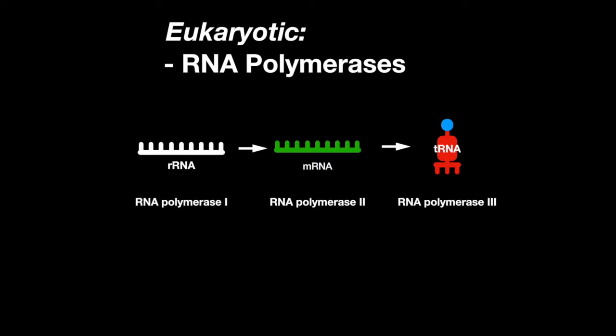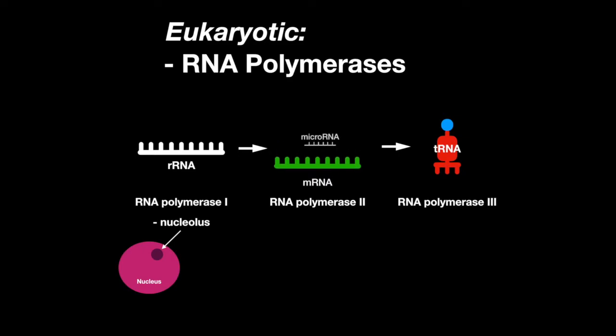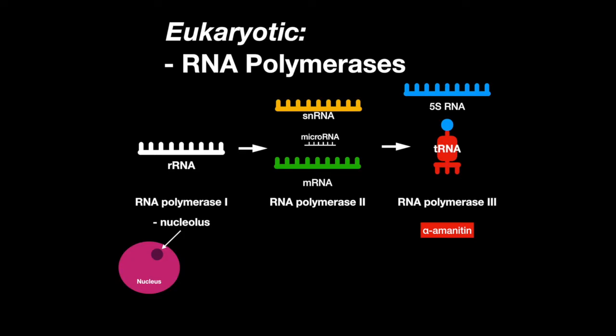RNA polymerase 1 is only present in the nucleolus and makes rRNA. RNA polymerase 2 makes mRNA, but it also makes microRNA and small nuclear RNA. And RNA polymerase 3 makes tRNA, as well as 5S rRNA. Alpha-amanitin, produced by Amanita phalloides — also known as death cap mushrooms — inhibits RNA polymerase 3. If ingested, this can cause extreme hepatotoxicity.